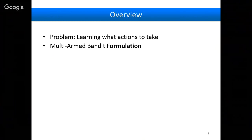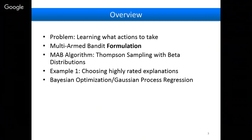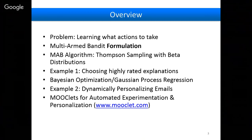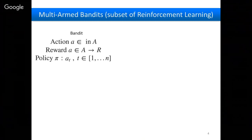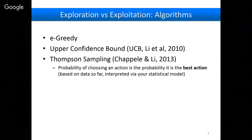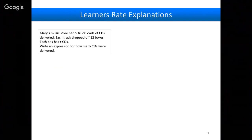I'm going to talk about two ways of formulating this problem. One is called a multi-arm bandit, and I'll talk about one algorithm I've used for that. The other is based on optimization of Gaussian process regression, and the application there is dynamically personalizing emails. To make it concrete: suppose you want to run a randomized experiment where you give people a math problem, they attempt it, get told the answer, and then you want to give them an explanation for why that answer is correct. What's a good explanation to give them?